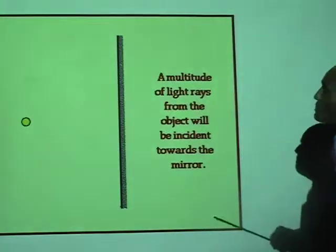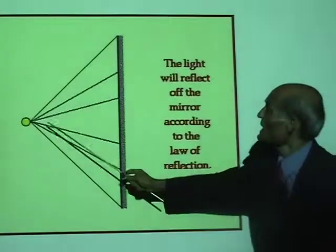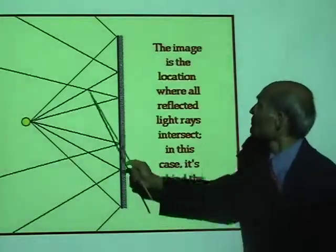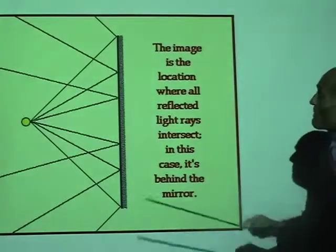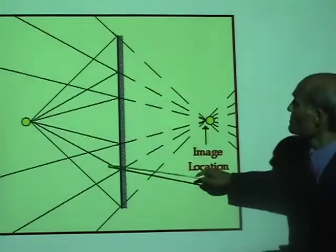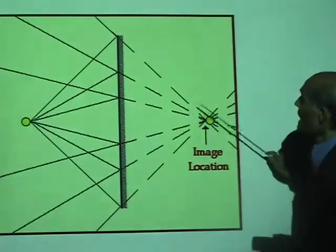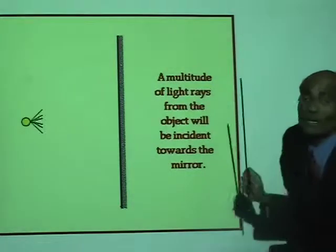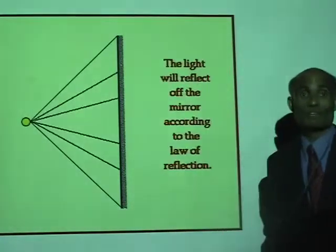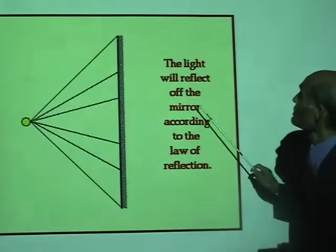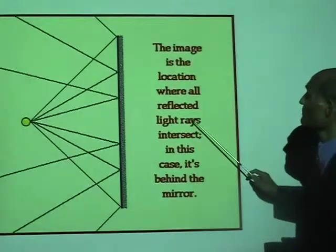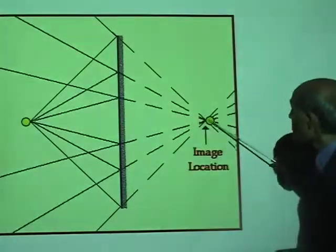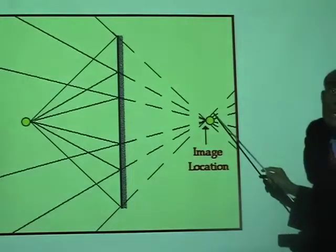I want you to watch this animation. You can take any number of incident rays, and they all get reflected according to the laws of reflection — angle of incidence equals angle of reflection. And all these reflected rays will appear to come from a single point, and that single point is the image.